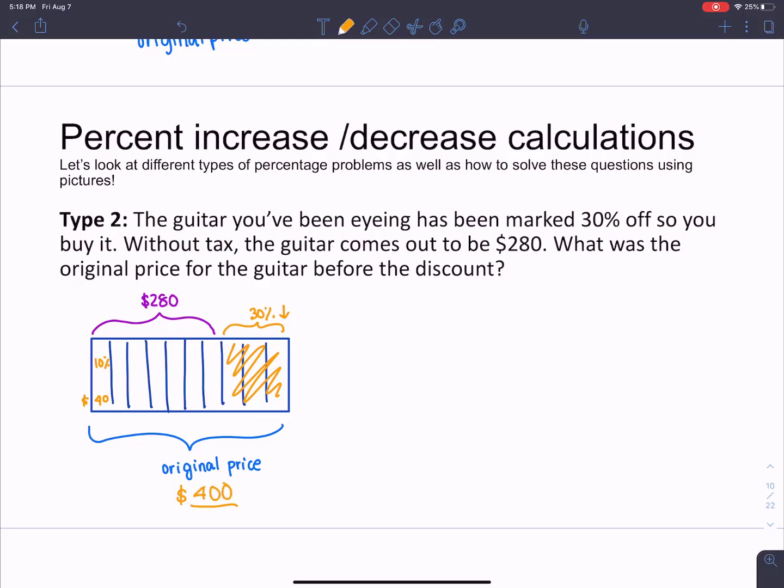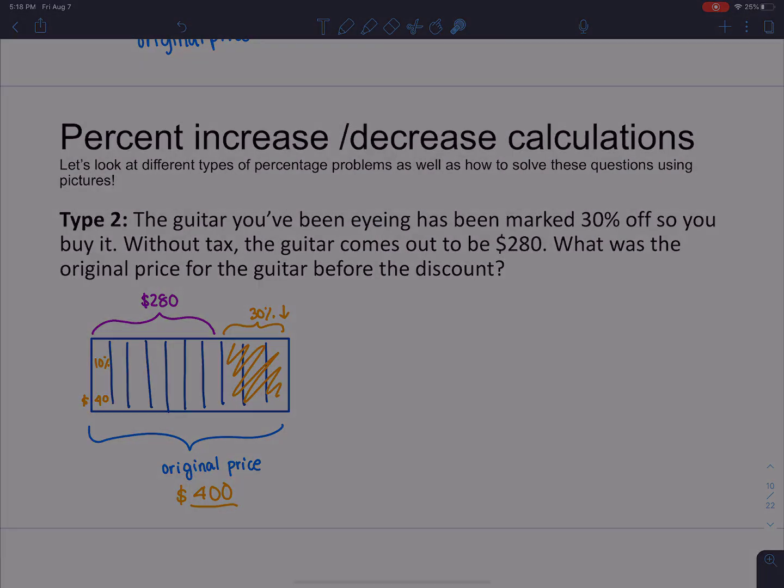Again, just want to reiterate. It's the same kind of thing that I said last time. You can't just find 30% of $280 and add onto it and expect to get the right answer. That's not how that works because 30% of $280 is not the same as 30% of $400. It's two very different numbers.